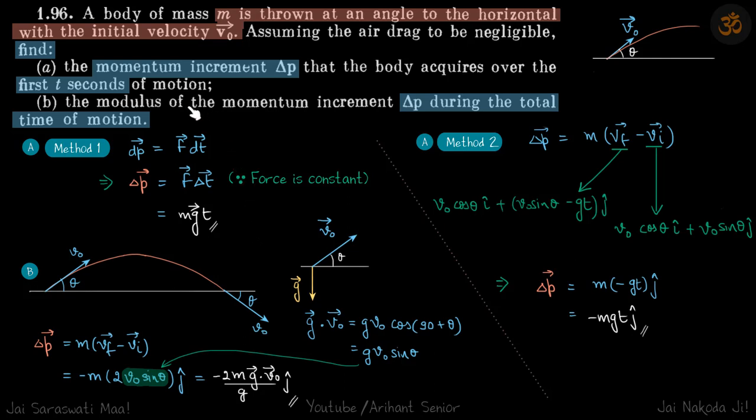Now coming to the second part, for the total time of flight what will be the change in momentum? So initially the particle was at theta angle v0 and eventually it was going in the plane at again at angle theta with the horizontal.